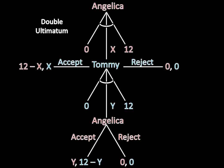For any X less than 11, Tommy makes a counteroffer of Y equals 1, which Angelica accepts. But no matter what happens, Tommy ends up with 11 cookies, and Angelica only gets 1.